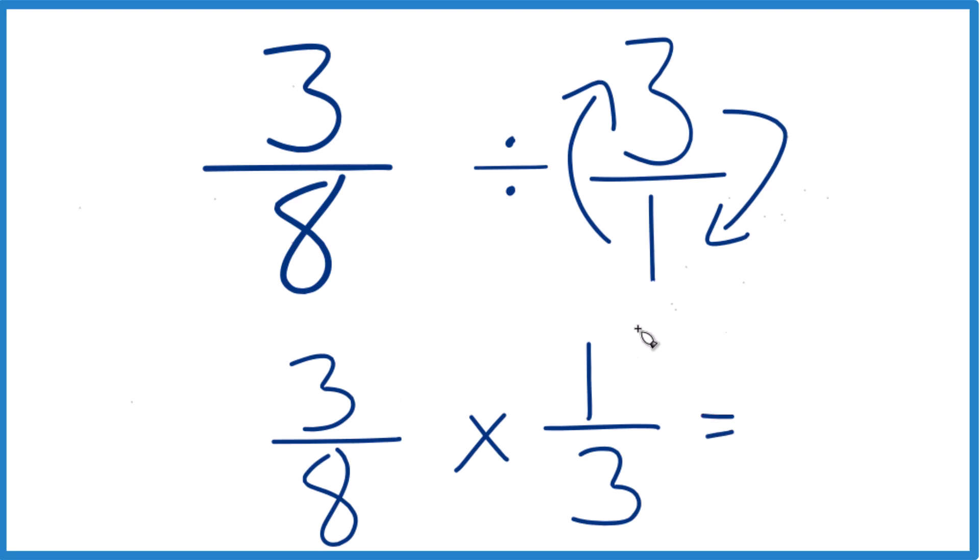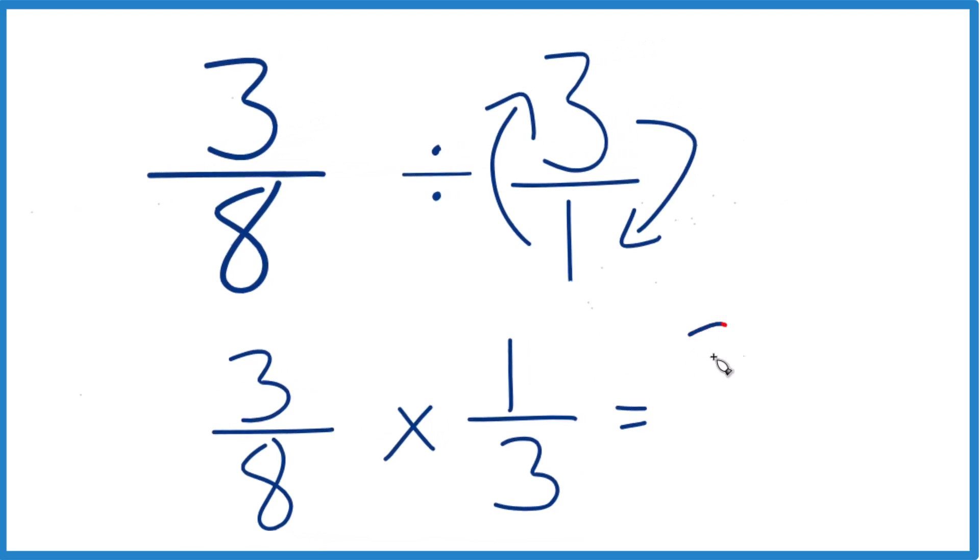Now with fractions, we multiply the numerators. Three times one, that's three. Then we multiply the denominators. Eight times three is 24.